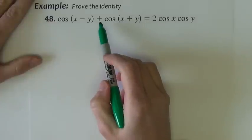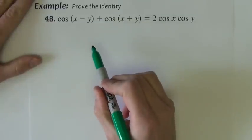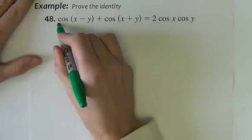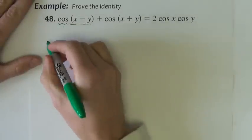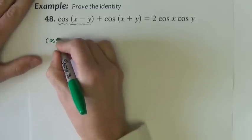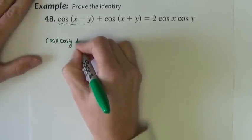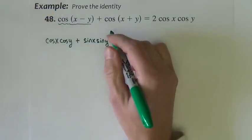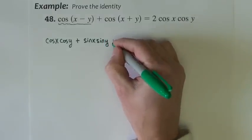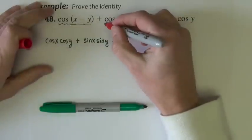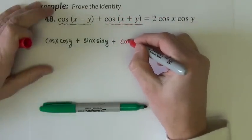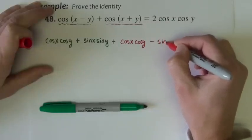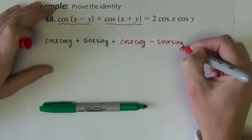Next identity, we've got the sum of two different cosine sum difference expansions. So let's see, this first one here, I'm going to do this in colors to help keep everything straight, is going to be cosine x cosine y plus sine x sine y. Now we want the plus between the terms. Now, this one expands to cosine x cosine y minus sine x sine y.